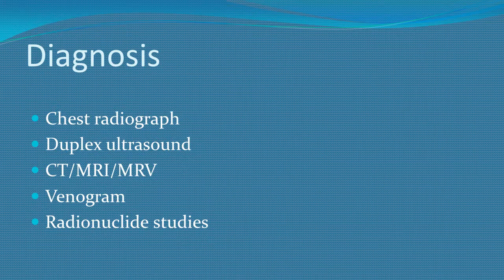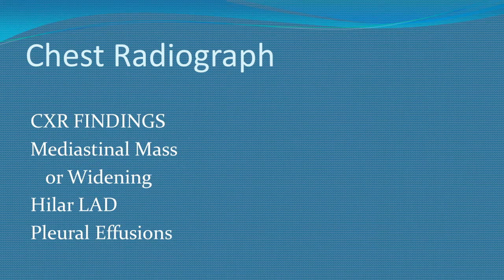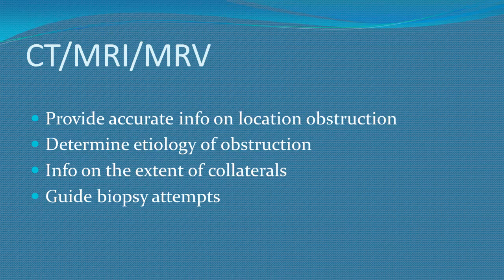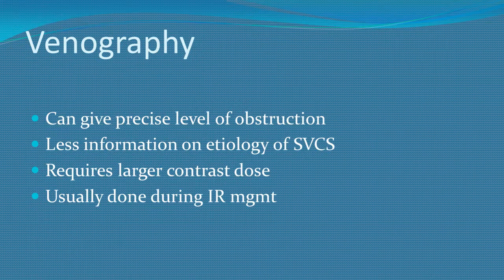Venography with contrast may be helpful for assessing the lumen of the vena cava and facilitates placement of permanent stents, but will not help elucidate the nature of extrinsic compression. Chest X-ray findings include mediastinal mass widening, hilar dilatation, and pleural effusion. CT provides accurate information on the location and etiology of obstruction and information about collaterals for biopsy planning. Venography can give a precise level of obstruction but provides less information on etiology, requires a larger contrast dose, and is usually done with interventional management.